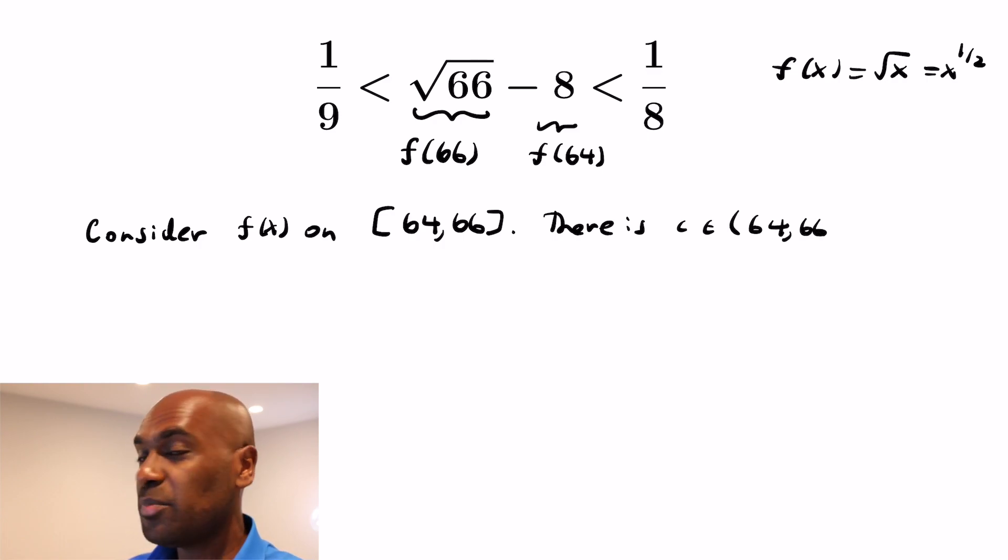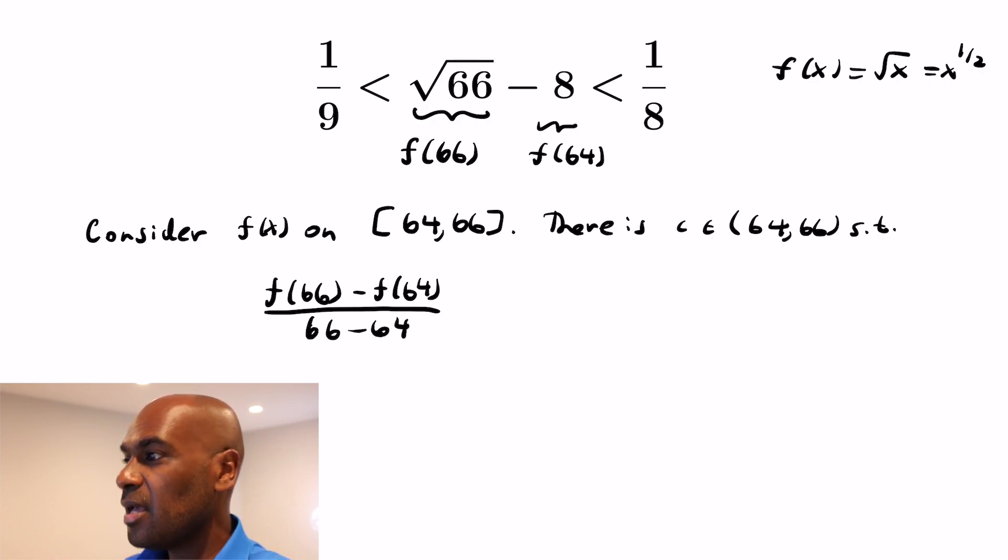So there's a point c between 64 and 66 so that the difference (f(66) - f(64))/(66 - 64) is going to equal f'(c) and f'(c) = 1/(2√c). The reason being that our function is √x and its derivative is (1/2)x^(-1/2) which is 1/(2√x).